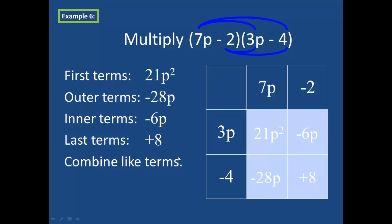Always remember to combine like terms when possible. So I have negative 28p and negative 6p, which we'll combine, so that my final answer is 21p squared minus 34p plus 8.